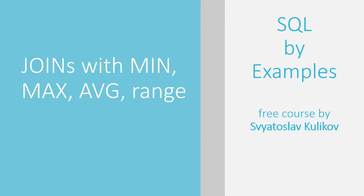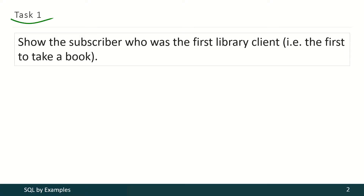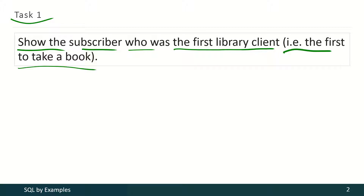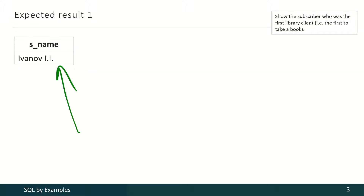In this video we shall talk about joins with aggregation and ranging functions usage. In the first task we have to show the subscriber who was the first library client — the first subscriber to take a book. The result is simple, but like with many other tasks, here we have several solutions.